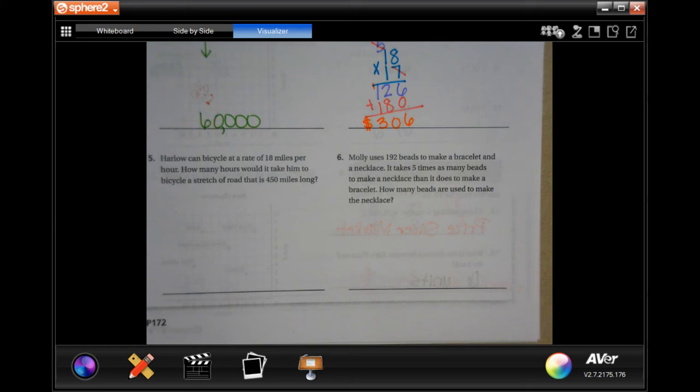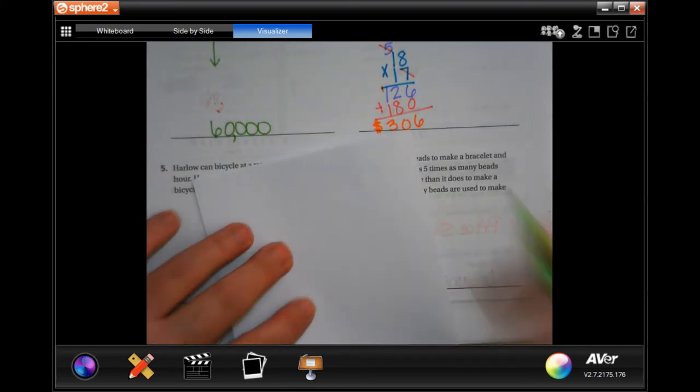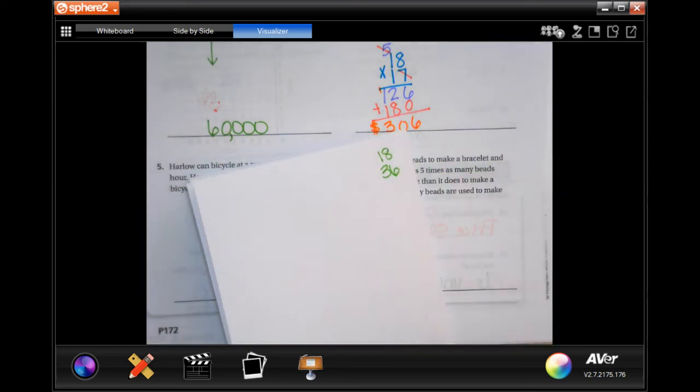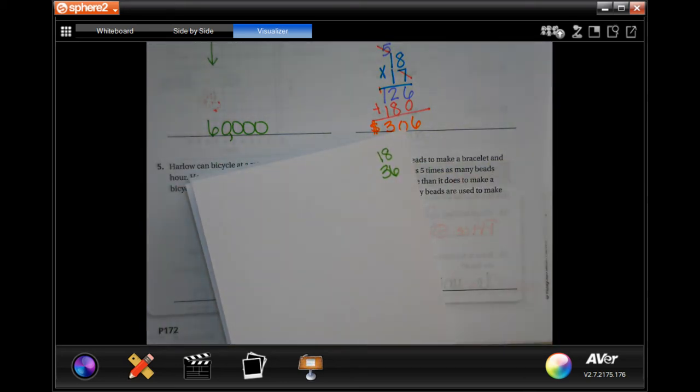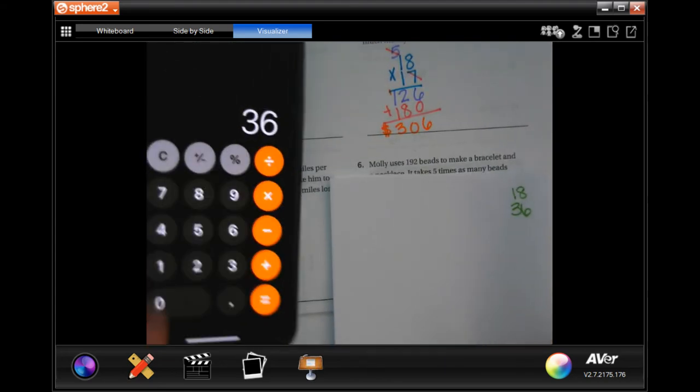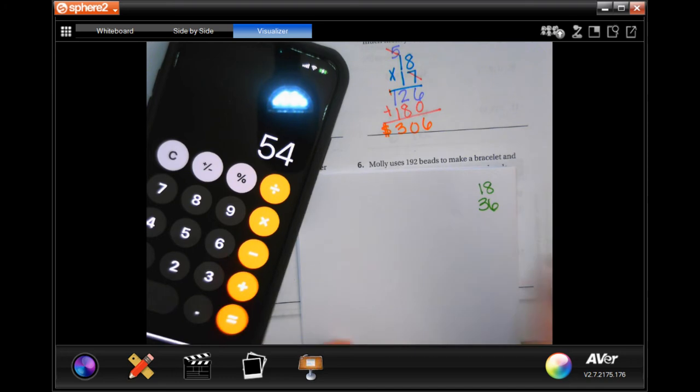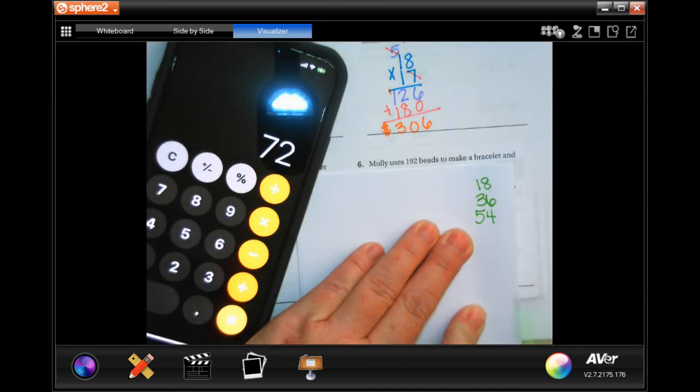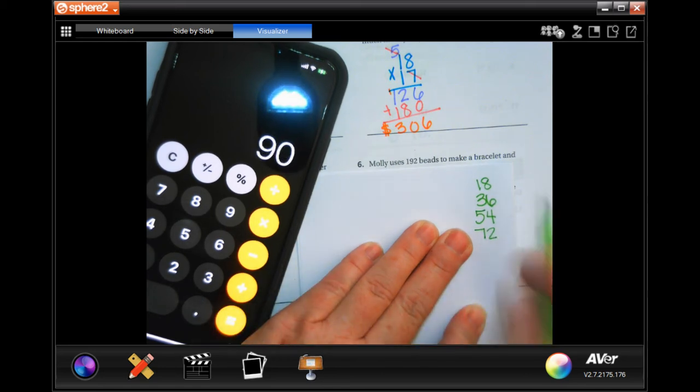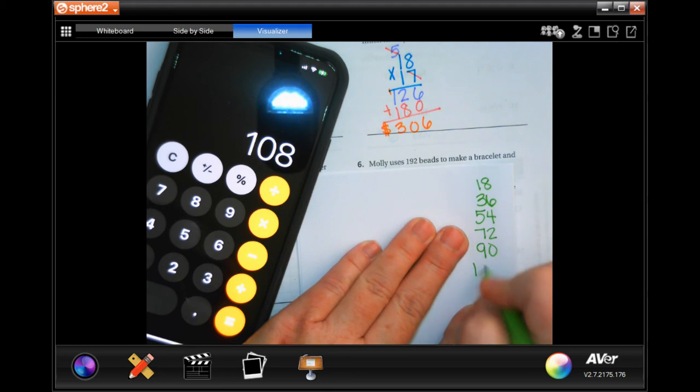Arlo can bicycle at a rate of 18 miles per hour. How many hours would it take him to bicycle a stretch of road that is 450 miles long? Well, let's write down our multiples of 18 to start with. So we have 18. I know we have 36. And after that, I'm going to grab my handy-dandy calculator. I'm going to do 18 plus 18. I'm going to keep hitting equals because I just did 18 plus 18. So I'm just going to get equal 54, 72, and 90. And hopefully that's enough. But I'm going to do one more just in case, 108.